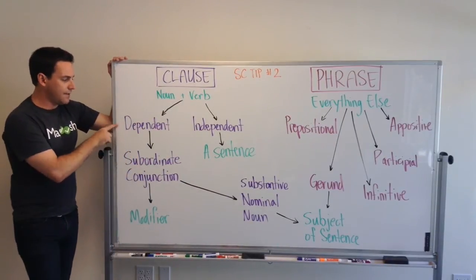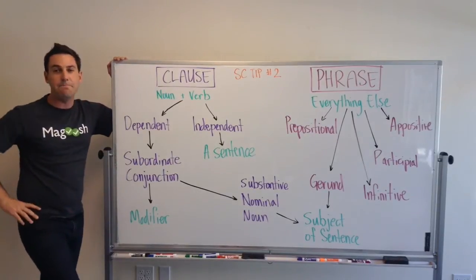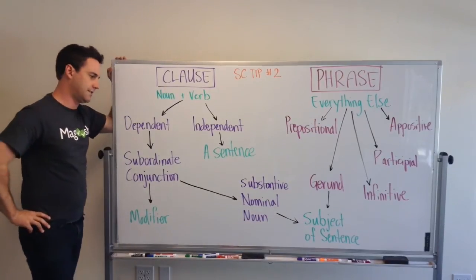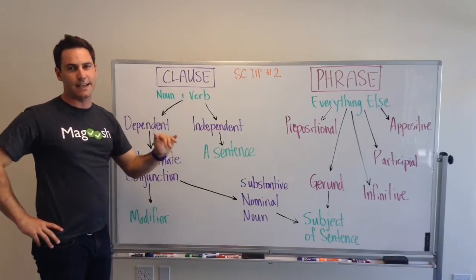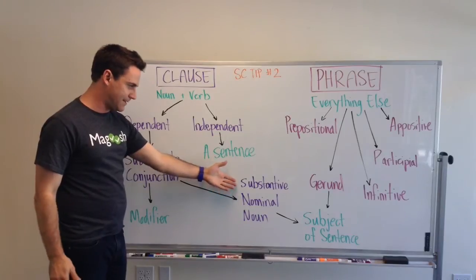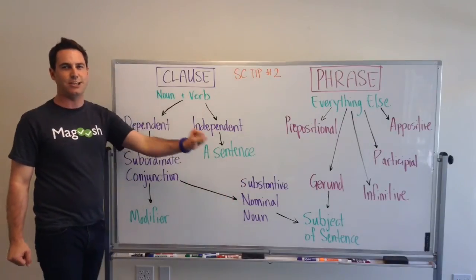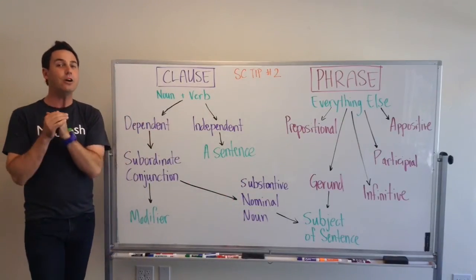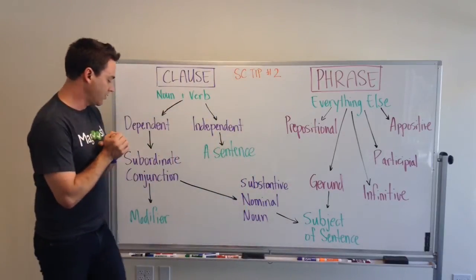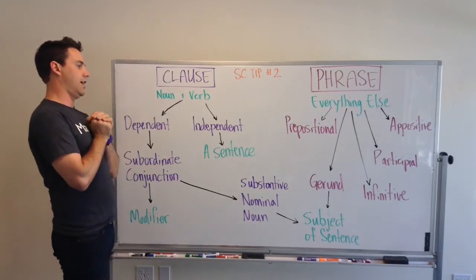When you add a subordinate conjunction to a clause, you're begging for more information to complete the idea — it's not logically complete without an independent clause. So when you have a dependent clause with a subordinate conjunction in front of it, it ends up being a modifier, which is exciting, because it can modify other parts of the sentence. We also have a special case: a substantive, nominal, or noun clause. You just need to know that this type of clause functions as a noun, which is why it can be the subject of a sentence — an entire clause taking the place of the subject.